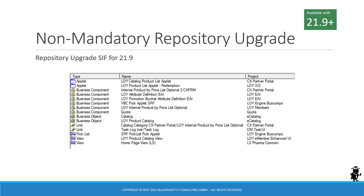Digging deeper into your log files, you will find the CIF file for the non-mandatory repository upgrade. That file includes some updates and inserts of objects related mostly to Siebel Loyalty — likely related to the loyalty portals mentioned earlier. These are the final updates to the Loyalty Portals product, which are now officially available again in Open UI as of 21.9.